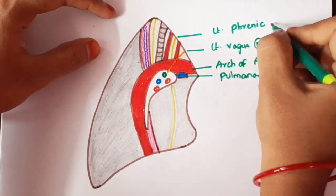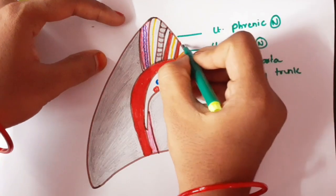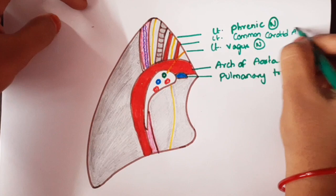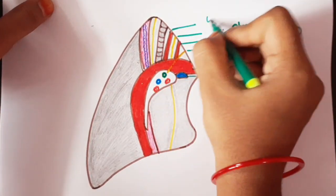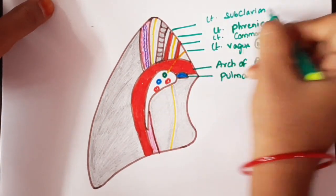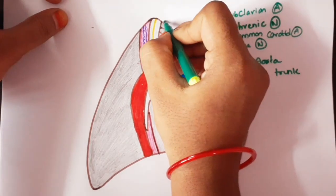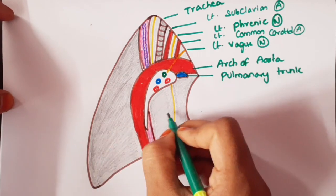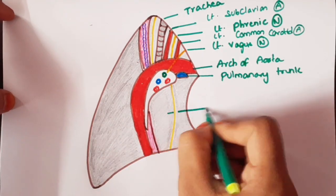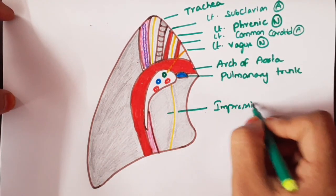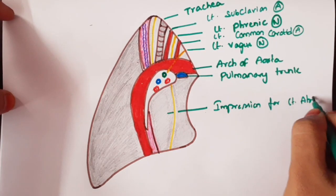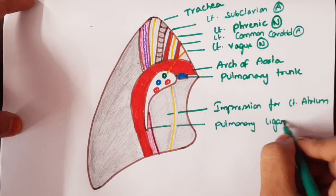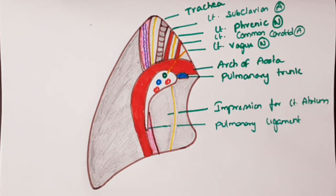This is the left phrenic nerve, which supplies the diaphragm. This is the left common carotid artery. You will see the impressions of the left ventricle with its atrium and a small part of the right ventricle. This is the pulmonary ligament.